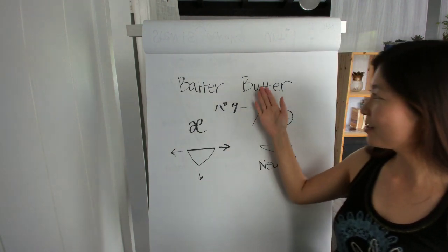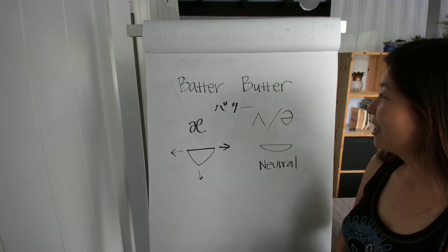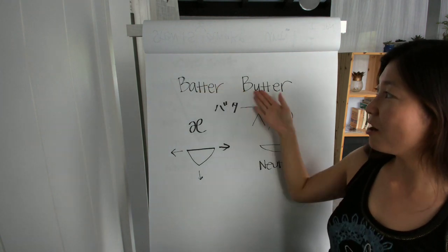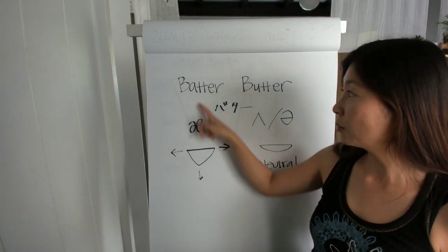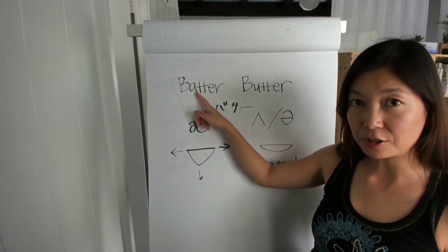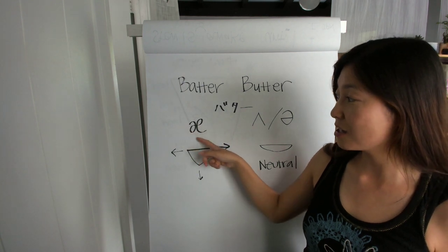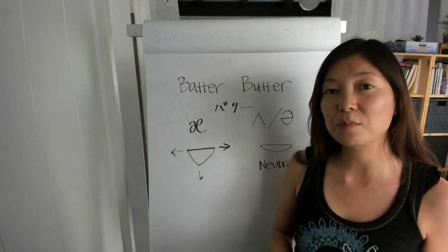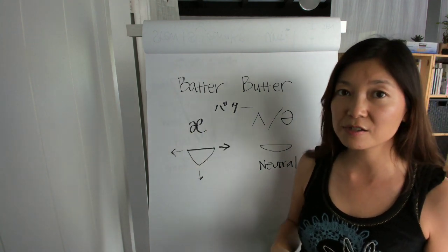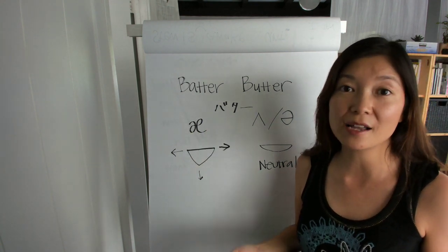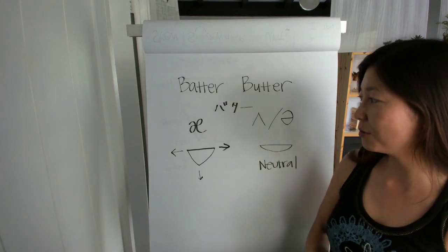Okay, so this is butter. Let's look at the vowels because the vowels are actually really different. For this one, 'batter', the vowel is this one. The symbol is this one, which is between the A and E. It looks like that, and it actually sounds kind of like between the A and the E.